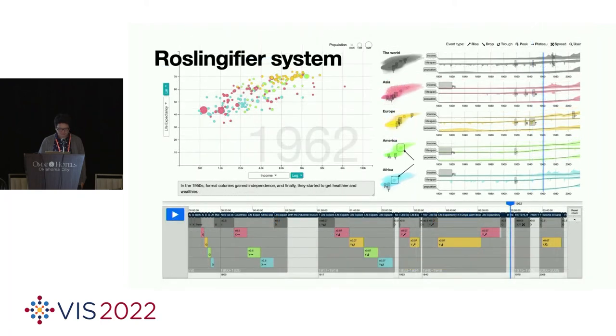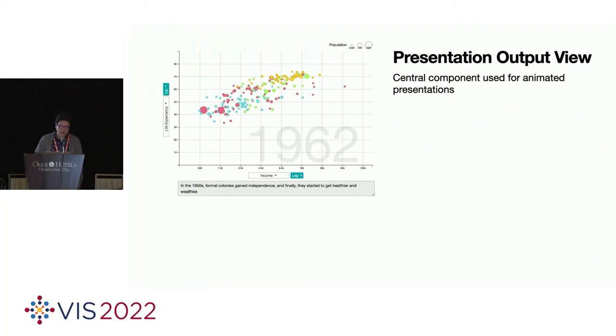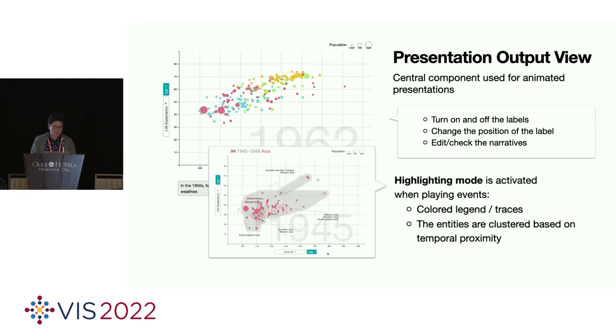This is a prototype system that we developed, and the system has three views. The first view is presentation output view, which allows users to turn on and off the labels, change the position of the labels, and edit and check the narratives at the bottom of the view. When the visualization is animated, the highlighting mode is on, which changes the color of individual items, and the entities are clustered based on temporal proximity.